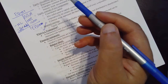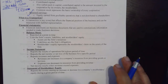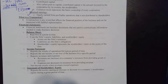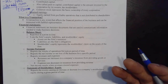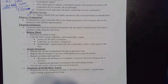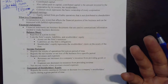A transaction is any event that affects the financial position of the business and can be measured with faithful representation. Faithful representation means we have paperwork to support the transaction. For example, when you purchase inventory for $10,000, you receive an invoice from the vendor stating what you owe, and when you write a check you have a payment record.